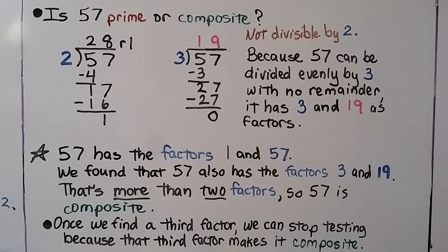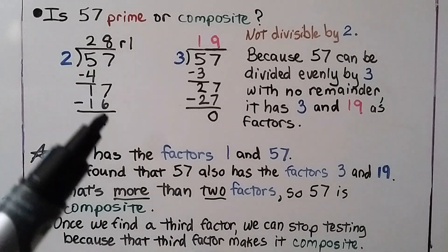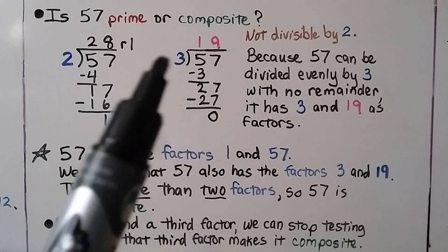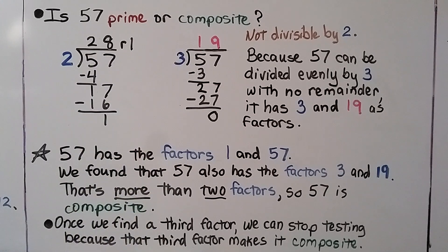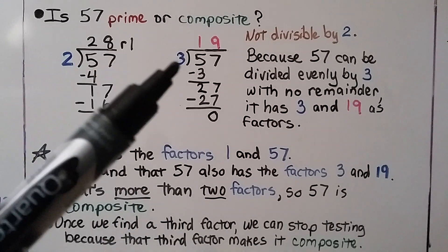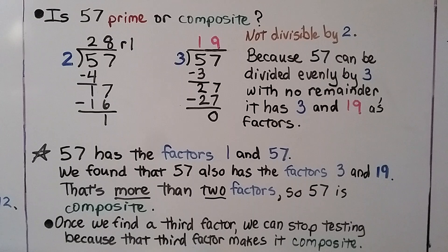Is 57 prime or composite? We try 57 divided by 2 and get 28 remainder 1, so it's not divisible by 2. We try 57 divided by 3 and get a quotient of 19 with no remainder. Because 57 can be divided evenly by 3, it has 3 and 19 as factors. So 57 has the factors 1, 57, 3, and 19 — that's more than two factors, so 57 is composite. Once we find a third factor, we can stop testing because that makes it composite.